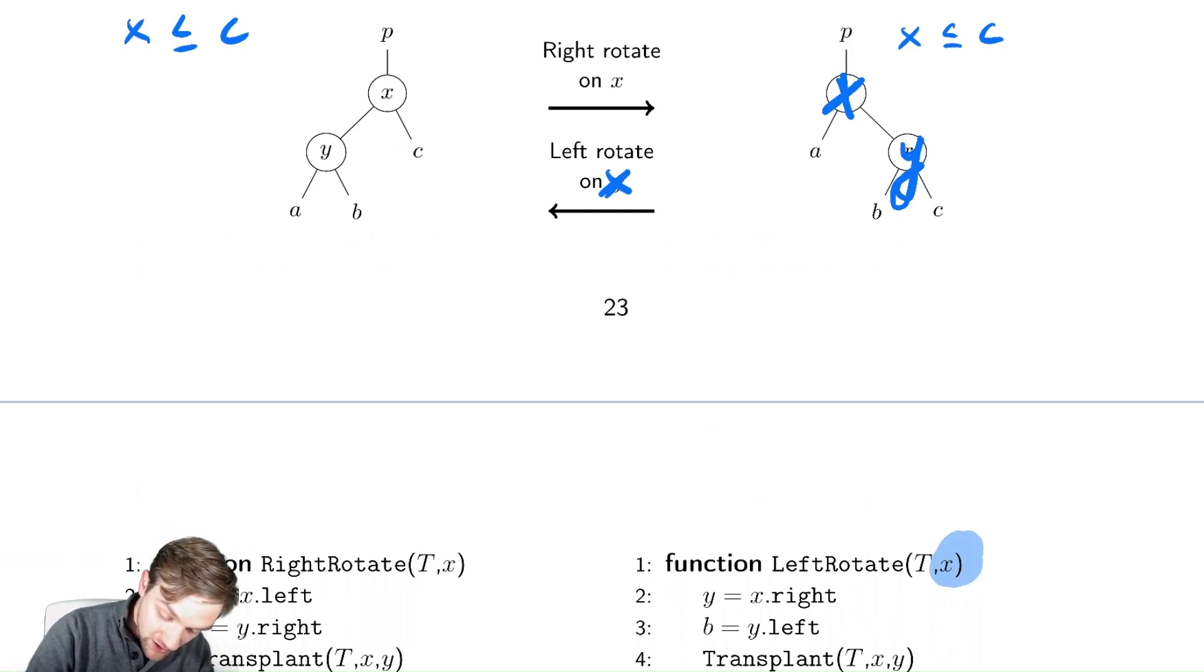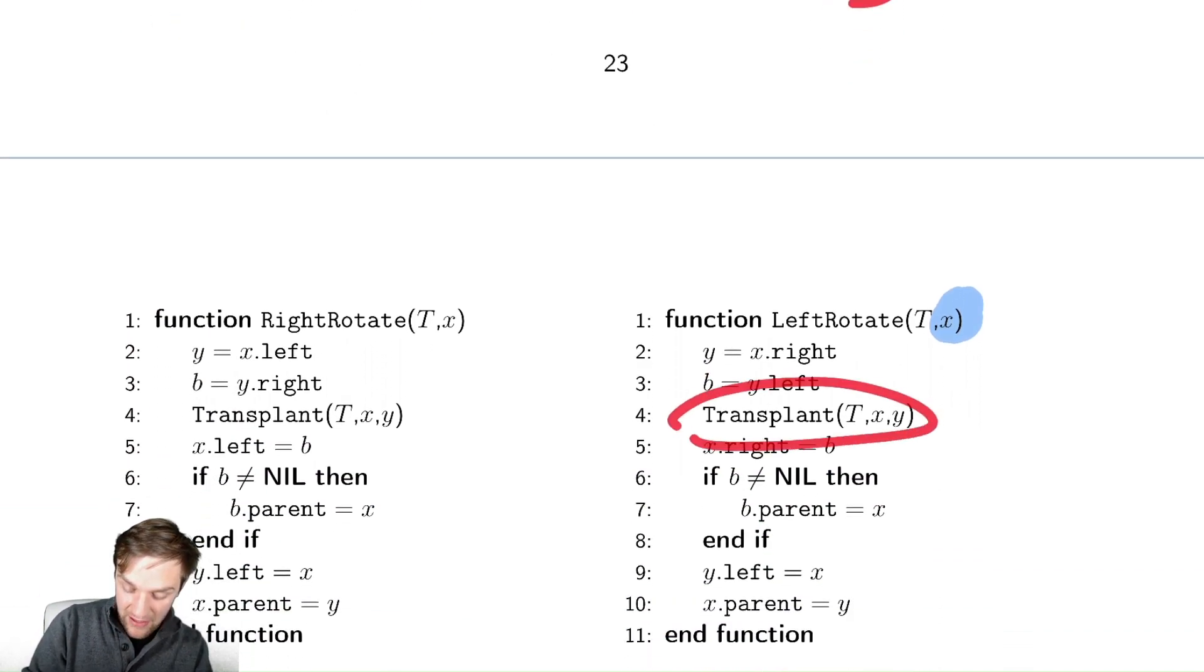So I'm doing a left rotate on x now, and over here my x becomes y, and my y becomes x. So what is going to get moved? Let's look. A is still to the left of x, c is still to the right of y, b is the only value that changes. So y is whatever is to the right of x, and b is whatever was to the left of y. We then do a similar transplant and then reassign the pointers exactly like in the right rotate.